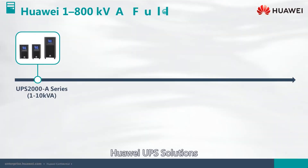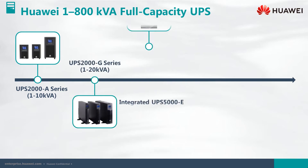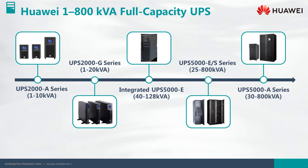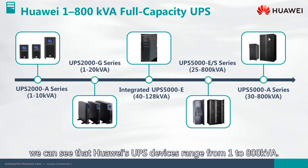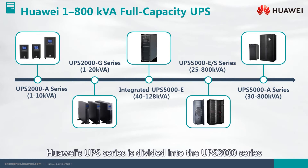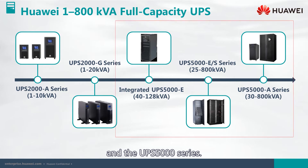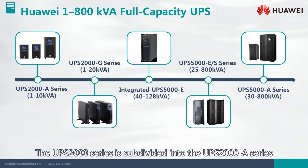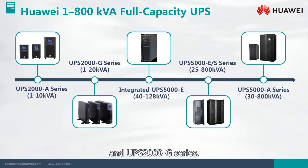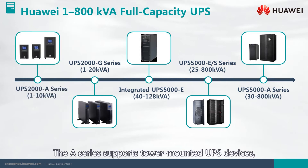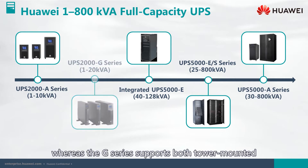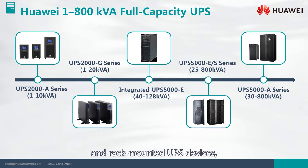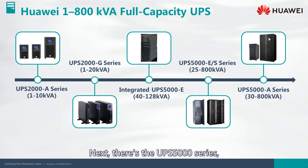This is the Huawei UPS family overview. From this diagram we can see that Huawei's UPS devices range from 1 to 800 kilovolt-amperes. Huawei's UPS series is divided into the UPS 2000 series and the UPS 5000 series. The UPS 2000 series is subdivided into the UPS 2000-A series and UPS 2000-G series. The A series supports tower-mounted UPS devices, whereas the G series supports both tower-mounted and rack-mounted UPS devices, and both have capacities less than 20 kilovolt-amperes.